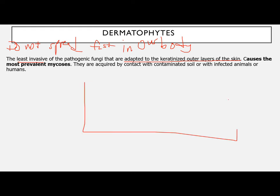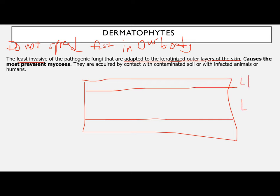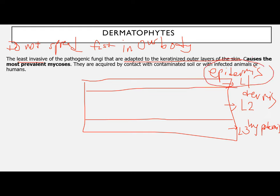Let's have a review. What are the three layers of the skin? The three layers of the skin are the epidermis, the dermis, and the hypodermis. Take note that this group of fungi would only affect the epidermal layer or the epidermis layer.